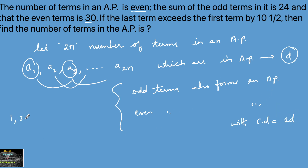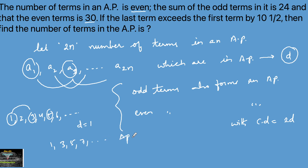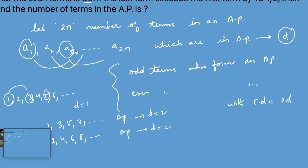For example, take the natural numbers 1, 2, 3, 4, 5, 6, ... with common difference 1. The odd terms 1, 3, 5, 7, ... form an AP with common difference 2, and the even terms 2, 4, 6, 8, ... also form an AP with common difference 2. So for our AP with common difference D, the odd and even subsequences each have common difference 2D.